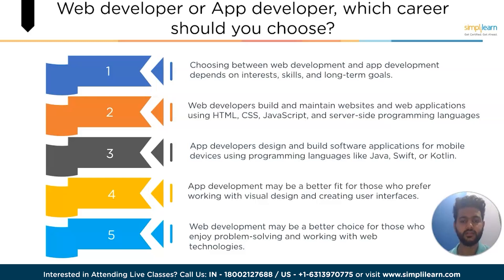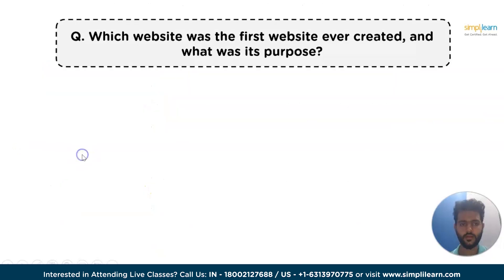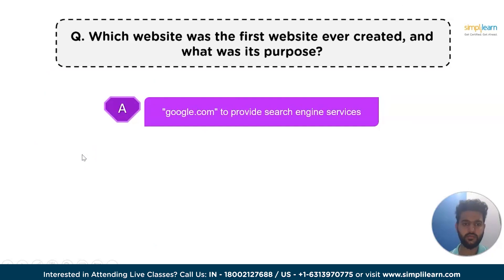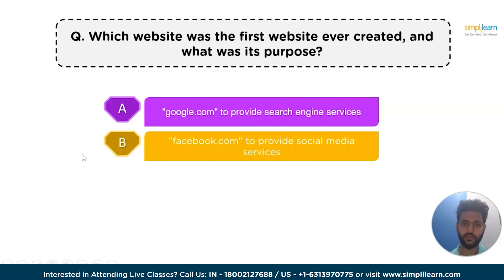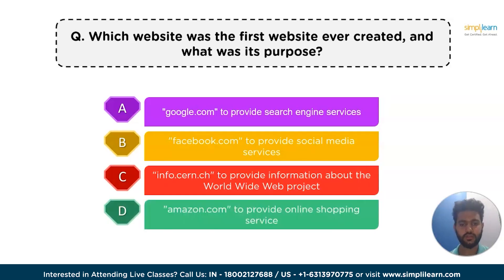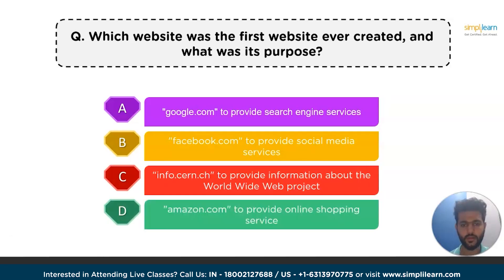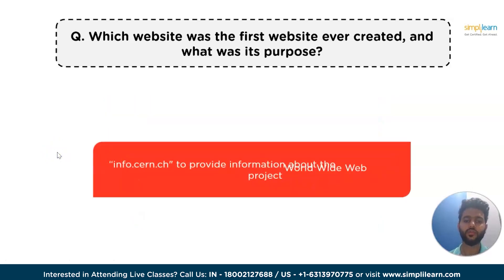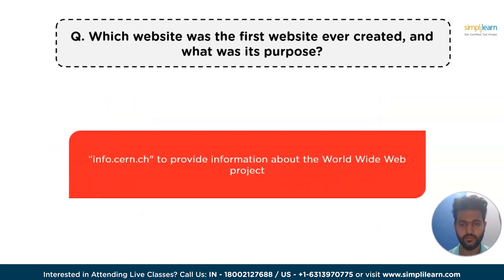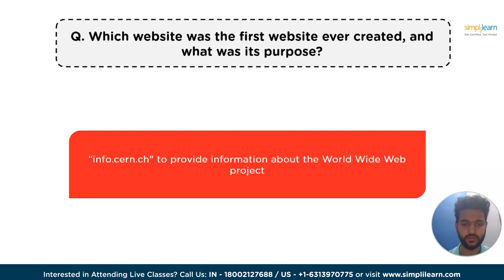Now let's get back to the question we asked at the beginning of the video — which website was the first website ever created? The answer is info.cern.ch, which was launched in 1991 by Tim Berners-Lee, with the purpose of providing information about the worldwide web project, including instructions on how to access and use it, as well as documentation and resources for developers.